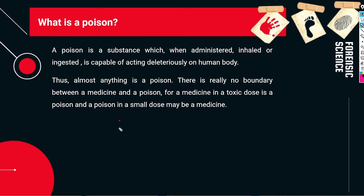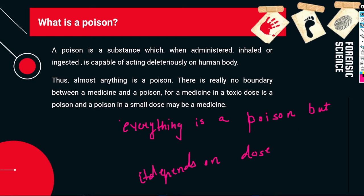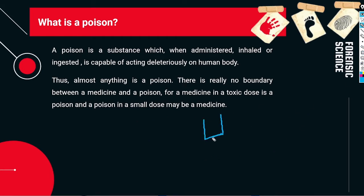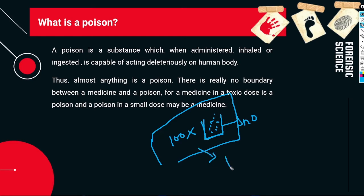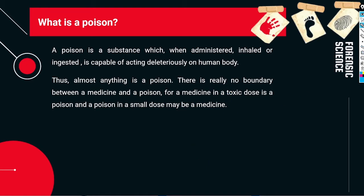Everything can be a poison — it depends on the dose. For example, a glass of water is not a poison, but if you multiply that by a hundred and drink it all at once, it can kill you. So even water is a poison if taken in excess. There is really no boundary between a medicine and a poison.